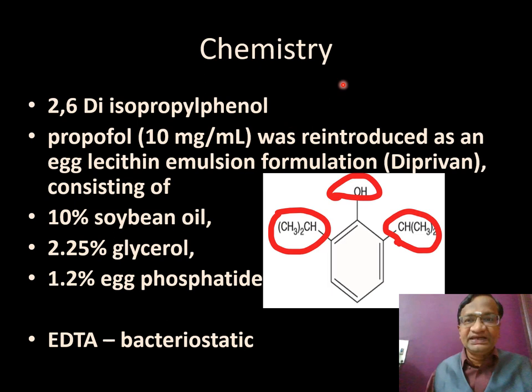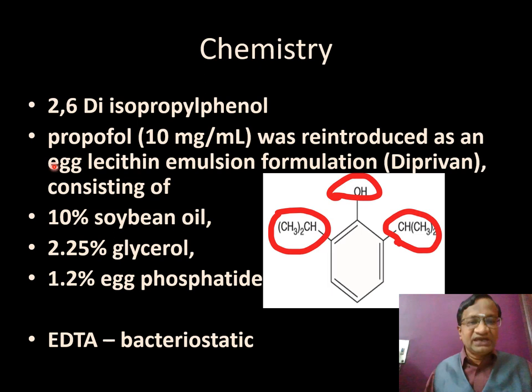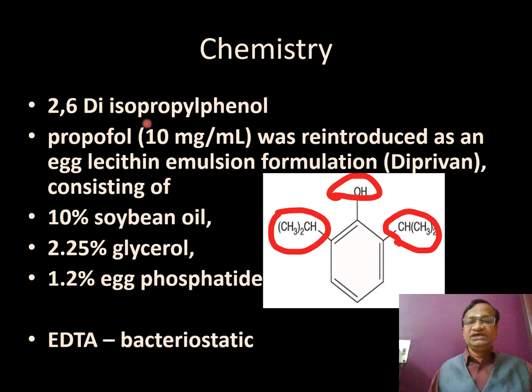Then Diprivan — 2,6-diisopropylphenol — came. This is propofol: 10 milligram per mL, i.e., 1% propofol. It was reintroduced as an egg lecithin emulsion formulation consisting of soya bean oil, glycerol, egg phosphatide, and EDTA as bacteriostatic. There is no Cremaphor EL, which had anaphylactic properties; instead they used the egg lecithin emulsion formulation.